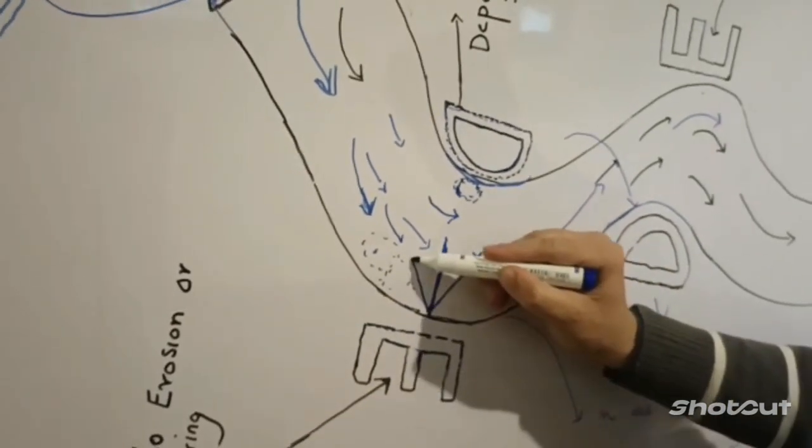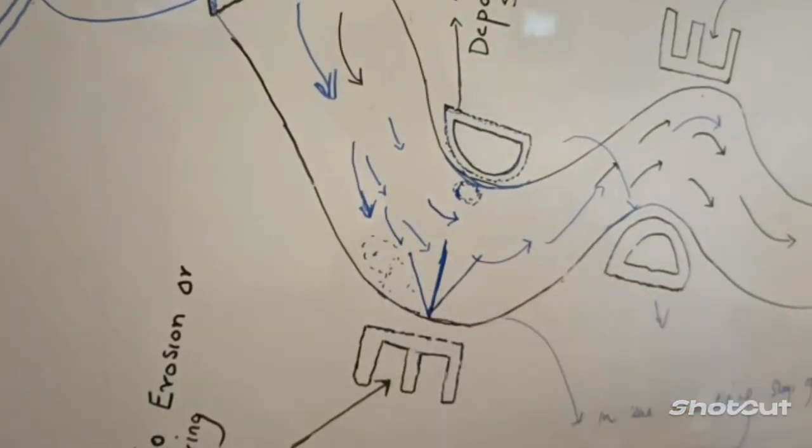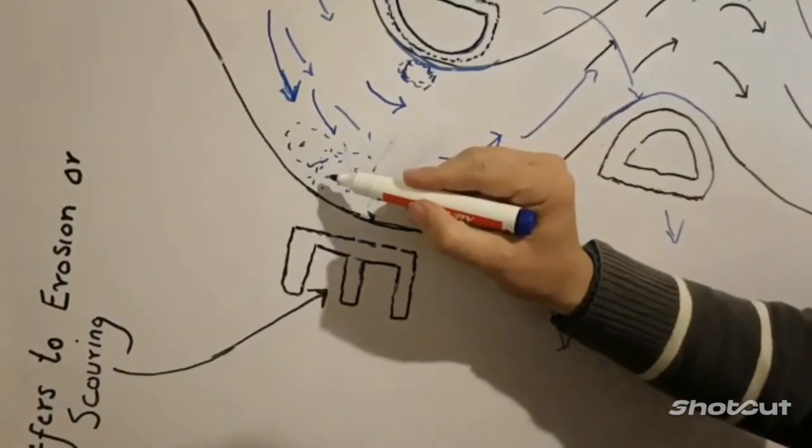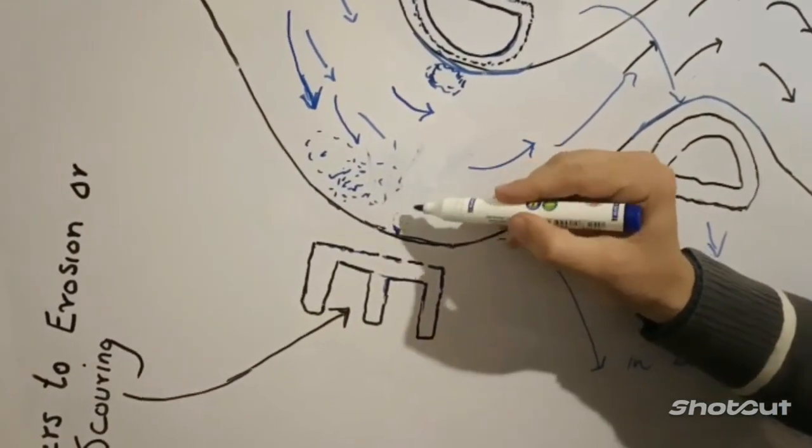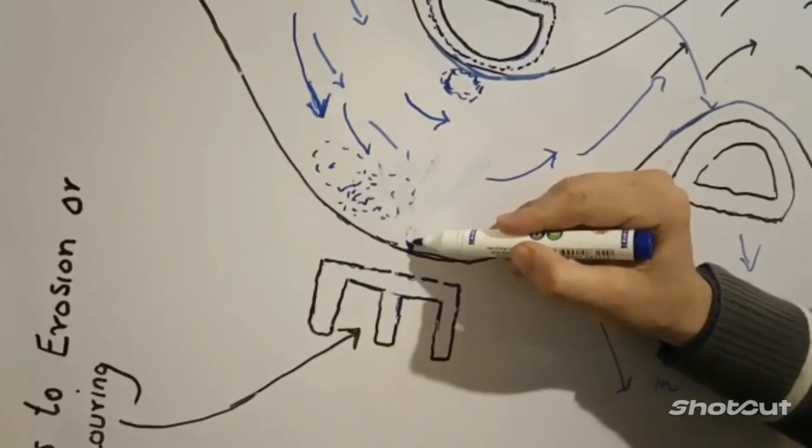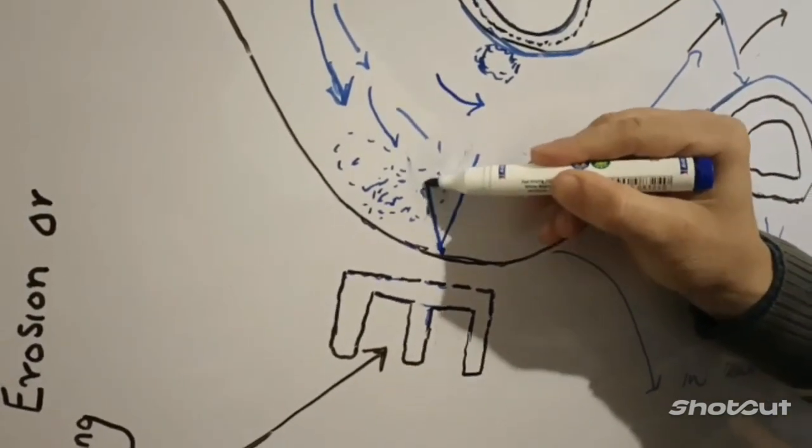For example, if you want to design a spur, which type will you design so that if scouring is occurring here, then your structure which you will build, that spur should be like this.